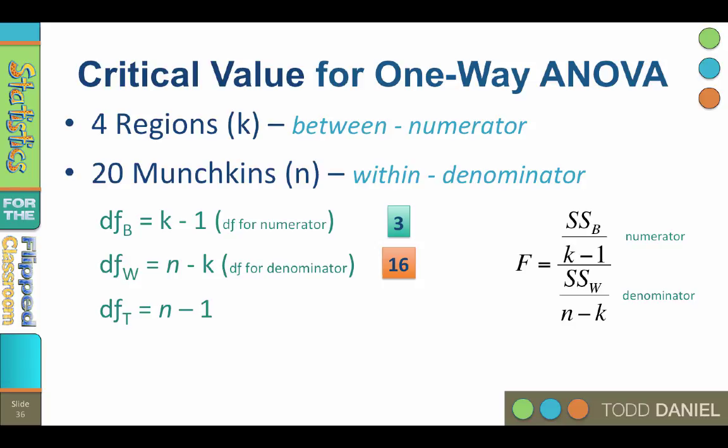The degrees of freedom total equals n minus 1, as it always does, with n being the total number of participants in all groups. There are 20 participants, so the total degrees of freedom are 19. You can also reach the degrees of freedom total by adding the degrees of freedom between and the degrees of freedom within.